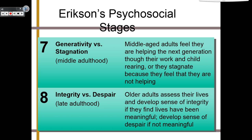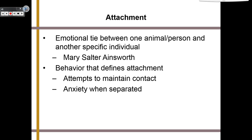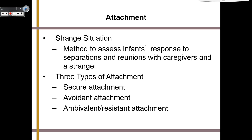Moving on from Erikson, we're now going to talk about attachment — an emotional tie between one animal or person and another specific individual. The main name applied to attachment theory is Mary Salter Ainsworth. She said that behavior defines attachment, and we know this if the child attempts to maintain contact while they're attached. If they try to maintain contact, that means they have strong attachment. If they have anxiety when separated from their parent, they also have strong attachment. To study and test this, Ainsworth came up with something called the strange situation — a method to assess the infant's response to separations and reunions with caregivers and a stranger.